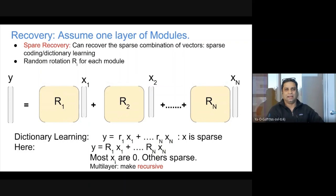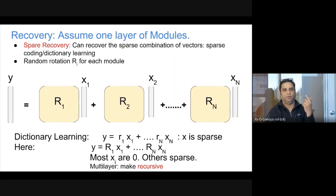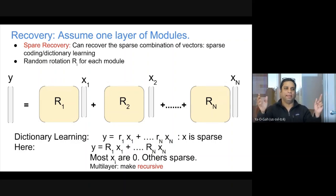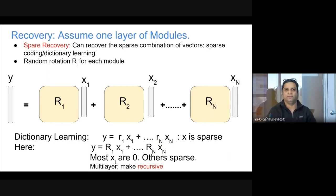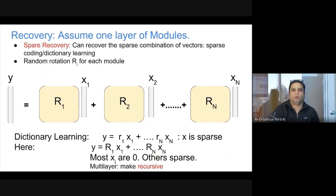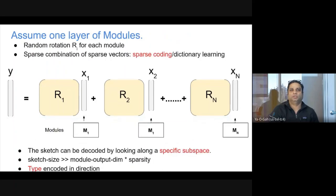This is exactly like sparse recovery and dictionary learning, except that in sparse recovery you're not packing a collection of vectors but a sparse collection of bits — many thousands of bits and only a few non-zero. So that's the only difference. This is a simple idea that works for one layer of modules. What if you have hierarchical modules? The idea is again very simple: XI, instead of being just the output of module I, you recursively compute the sketch of the inputs to module I and append that to XI.